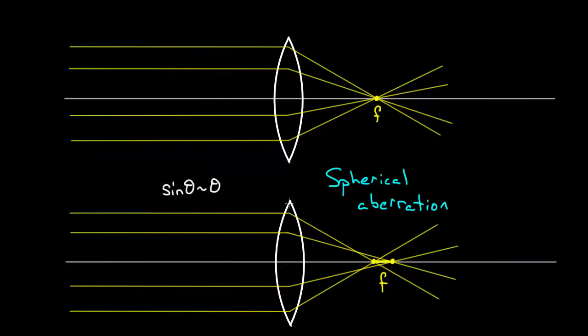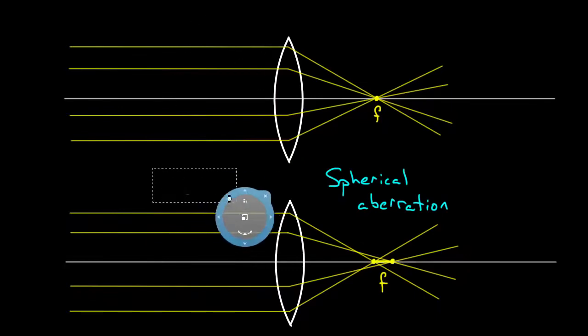The problem is that it's easy to make spherical lenses — it's easy to make a perfectly spherical shape. If you wanted to make a lens that sent all rays exactly through the focal point, you'd have to use a different shape, because spheres just don't cut it in that case.